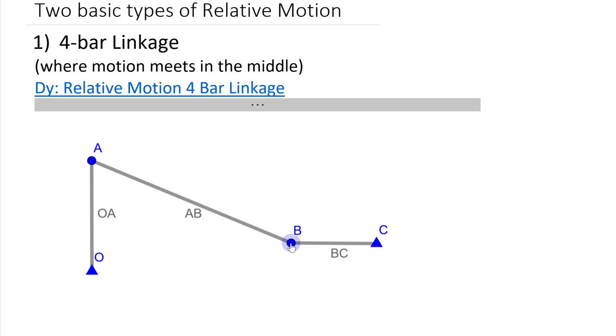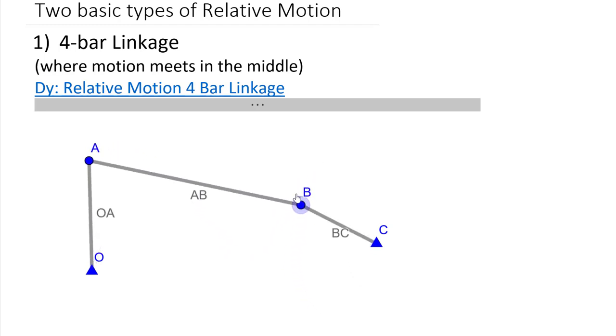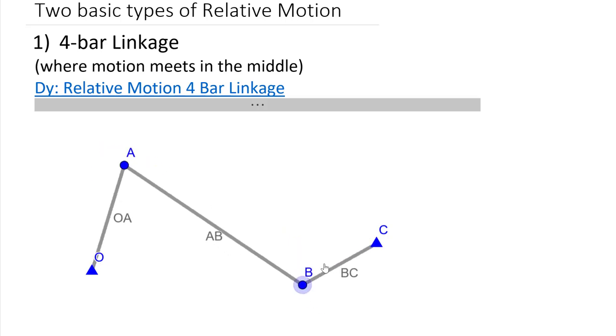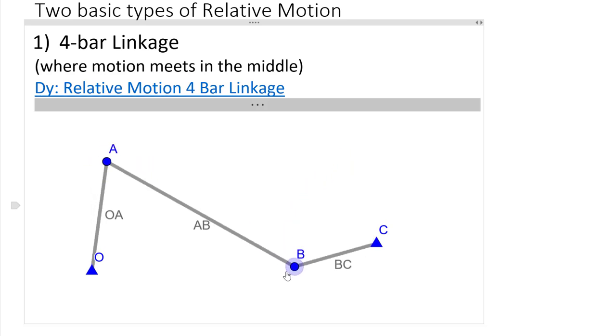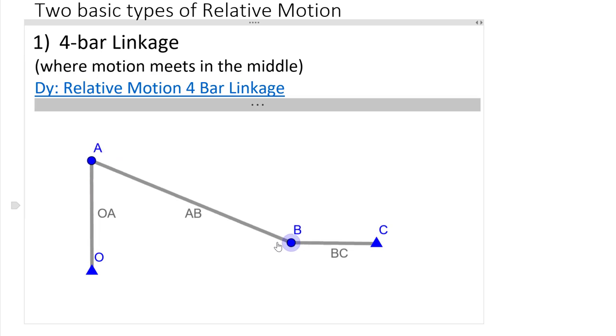So in this case we have one body here BC in fixed axis rotation, another body here OA in fixed axis rotation. If we move point B, I can either move it up or down, I can see that the whole system has to move in harmony with these given fixed axis links on either end. So AB is essentially at the will of the motion of OA and BC. I think about this as being motion meets in the middle. The motion of AB is going to be dictated by the motion of both A and point B and it's going to move in conjunction with them.